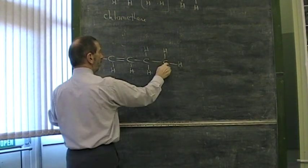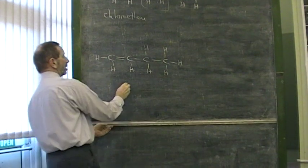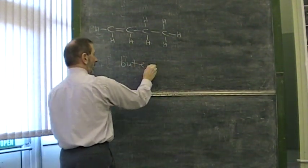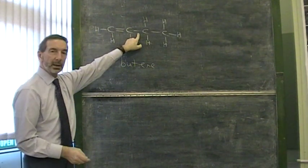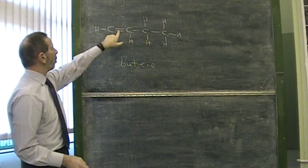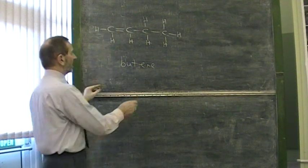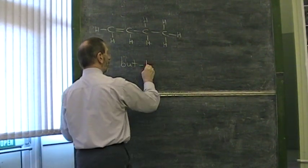This is one, two, three, four, but, but-ene. Is that good enough? No, because the double bond could have been there. So we have to make it clear that but-ene is on the first of the carbon atoms. We call this but-1-ene.